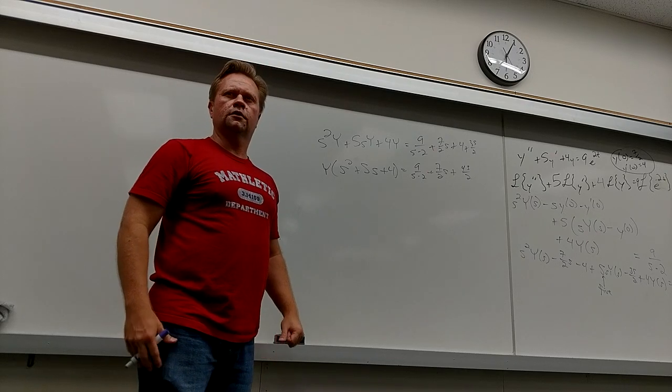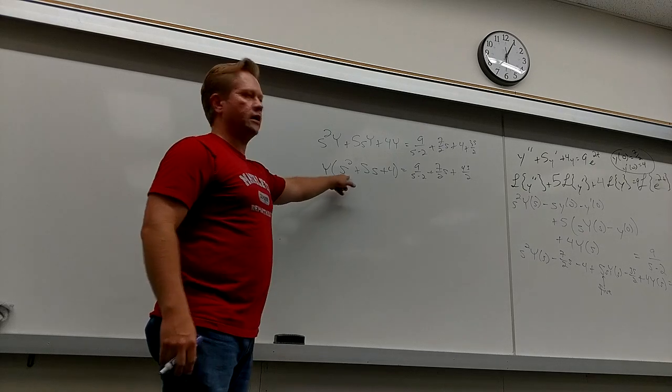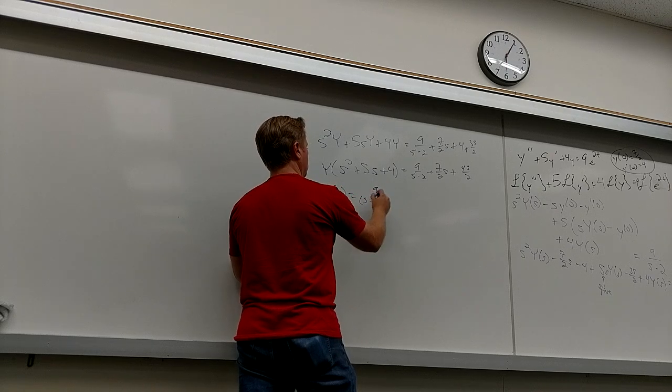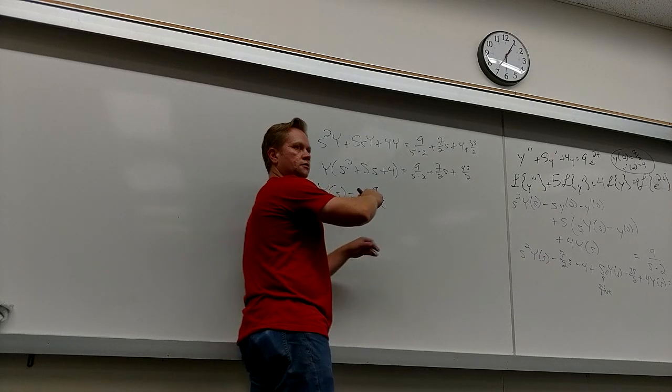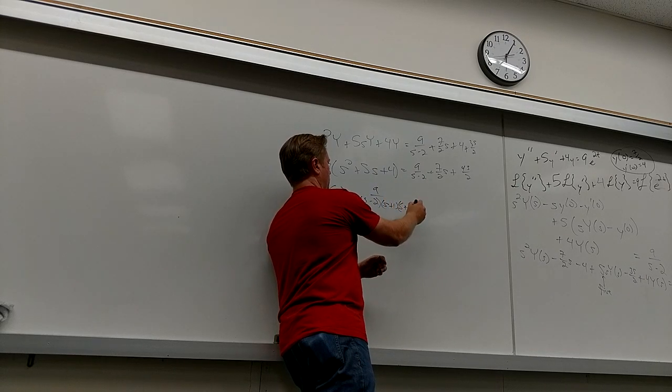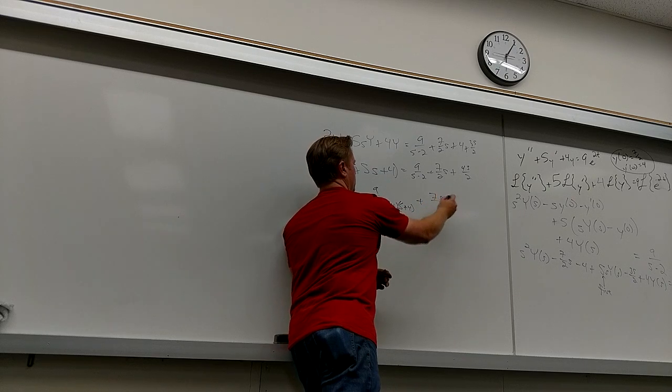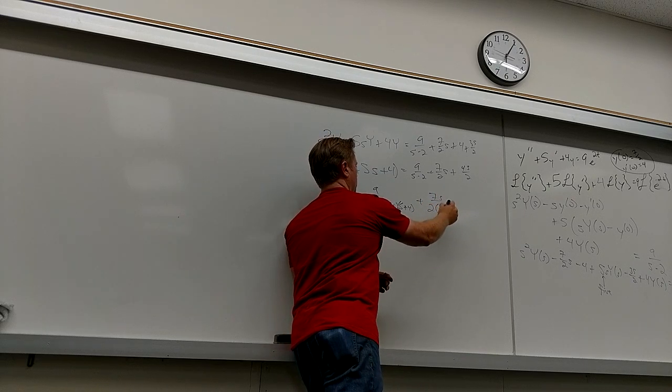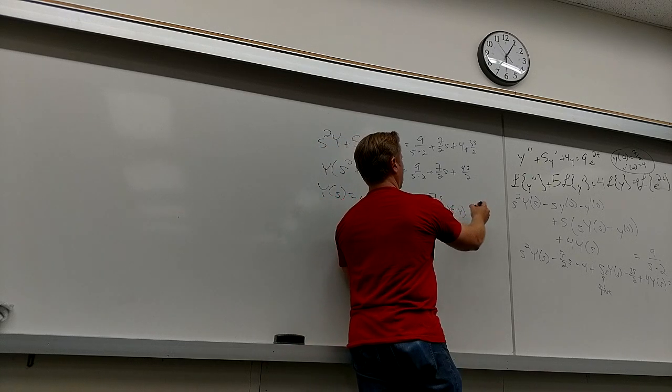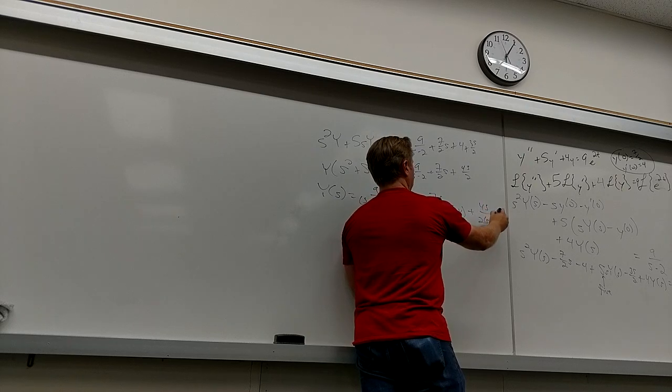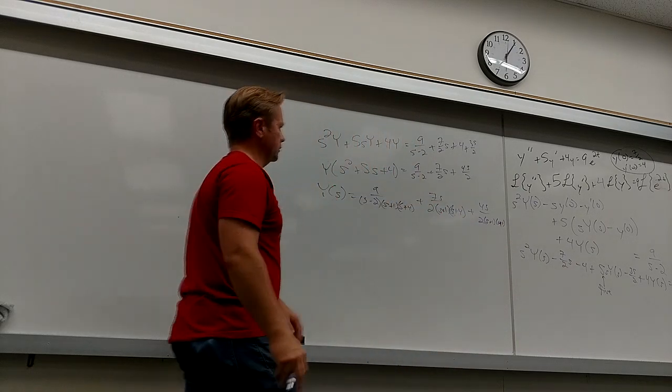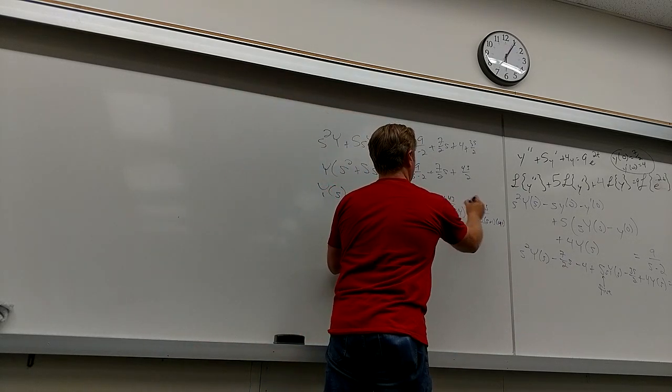I get Y times S squared plus 5S plus 4 equals 9 over S minus 2 plus 7 over 2S plus 43 over 2. And then, what do you think you do? Divide by that. I like it. I get Y of S equals 9 over S minus 2. Might as well factor this thing as we do this. Is that going to? Come on, plus 4 there. Plus 7S over 2 times S plus 1, S plus 4. Plus 43 over 2, S plus 1, S plus 4. I could have just put that all together, but oh well.